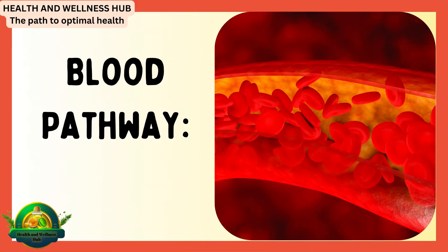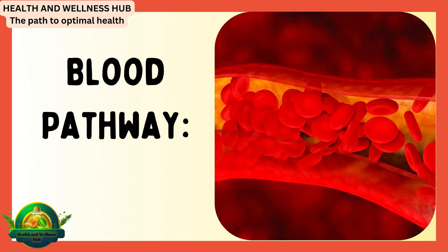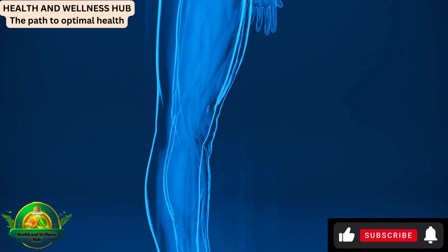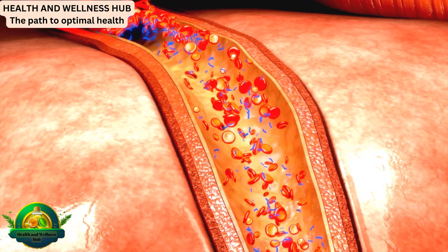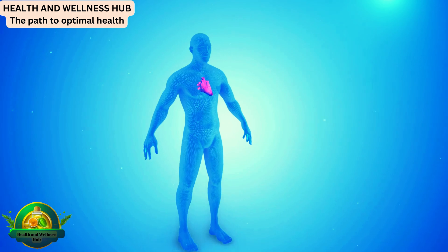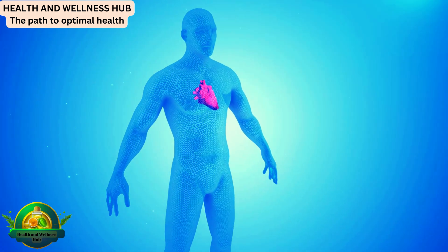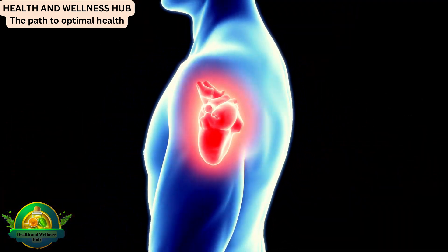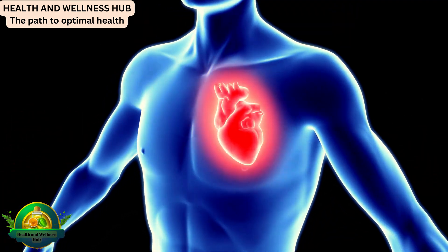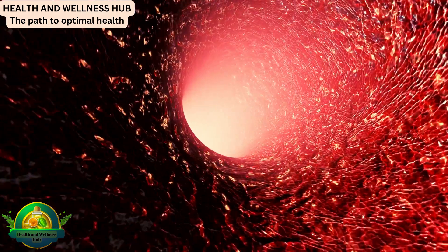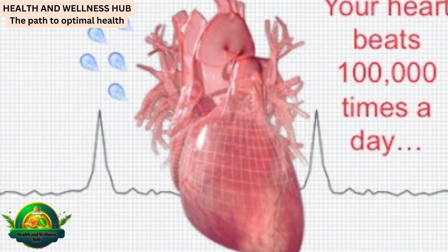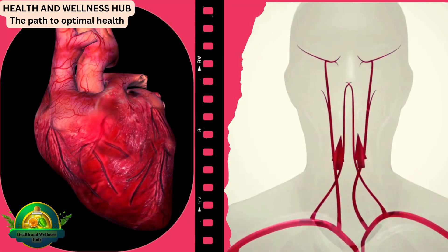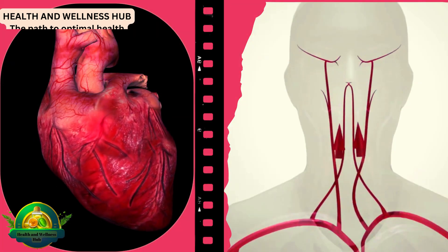Now let's follow the incredible journey of a single red blood cell. It begins in a human toe, deoxygenated and in need of oxygen. This blood flows through the vena cava into the right atrium, propelled by the rhythmic contractions of the heart. As the heart contracts, the blood is pushed into the right ventricle and then through the pulmonary valve into the pulmonary artery, destined for the lungs. The human heart beats over 100,000 times per day, effectively pumping blood through this intricate network.